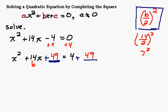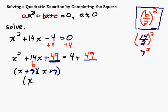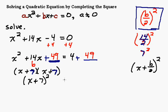Since we created a perfect square trinomial, it makes sense that we're going to factor it. Factoring gives us x plus 7 times x plus 7: 7 plus 7 is 14, and 7 times 7 is 49. A helpful hint: the 14 over 2 gave us 7, and that's always going to be the number in x plus 7 when you factor. Before you square it, b over 2 gives you the number, so factored it becomes x plus 7 squared. In other words, after factoring it's x plus b over 2, quantity squared.